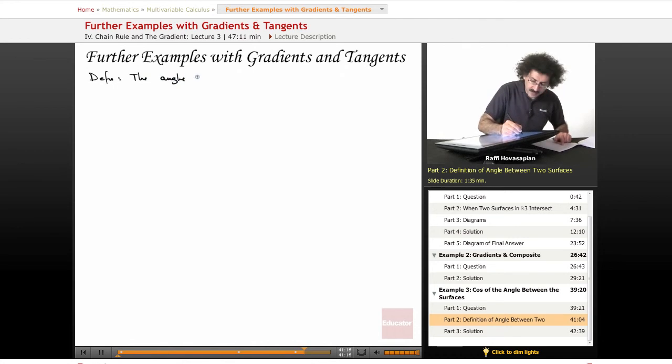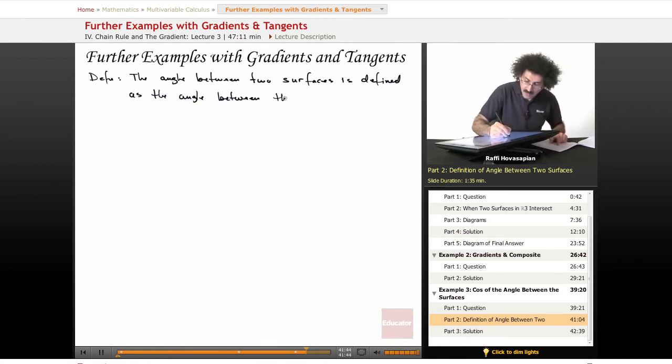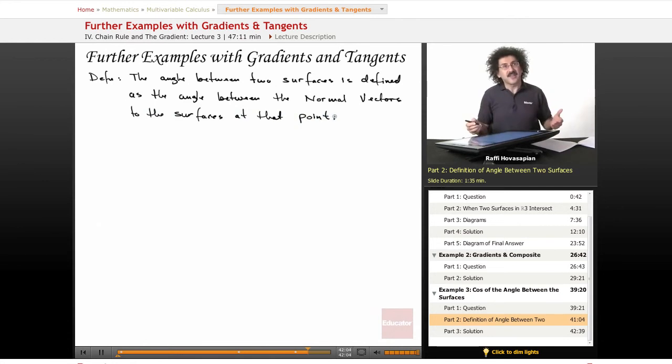The angle between two surfaces is defined as the angle between the normal vectors to the surfaces at that point. And we know how to find the vector that is normal to a surface at that point. It's the gradient vector evaluated at that point. That's the whole idea.